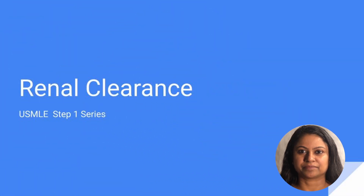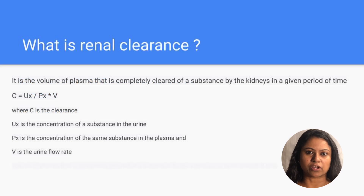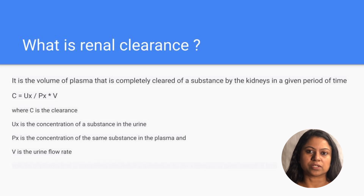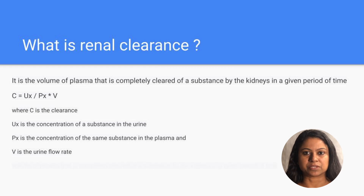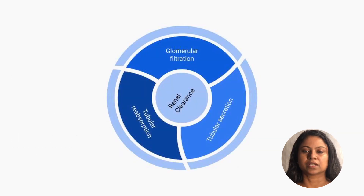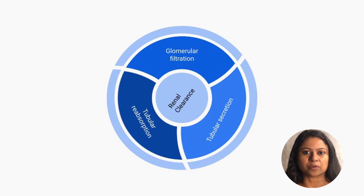Hi, this is Sujata. In this video, let's discuss renal clearance. Renal clearance is the volume of plasma that is completely cleared of a substance in a given period of time. It is given by the formula C = Ux/Px × V, where Ux is the urine concentration of substance X, Px is the plasma concentration of substance X, and V is the urine flow rate.